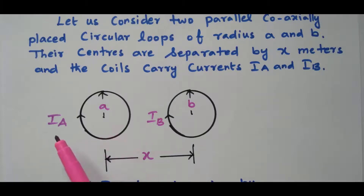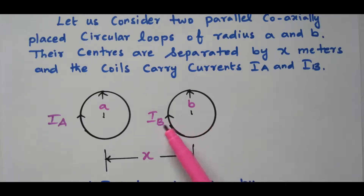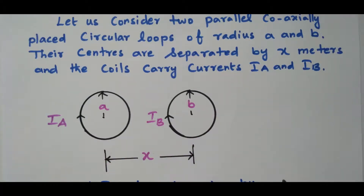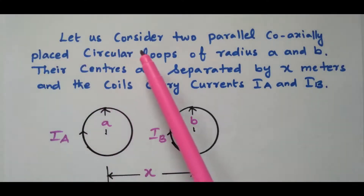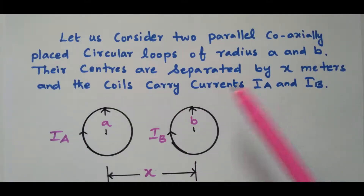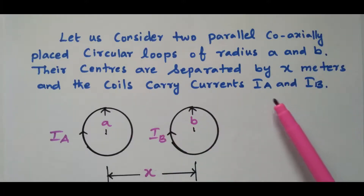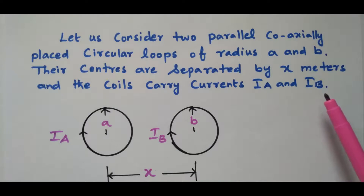Conductor A carries current IA with circular current loop radius a. Conductor B carries current IB with circular loop radius b. The center-to-center distance between the current loops is x meters. We consider two parallel coaxially placed circular loops of radius a and b, with centers separated by x meters, and currents IA and IB.